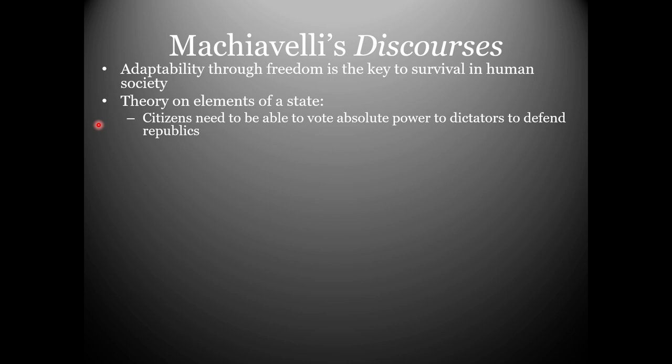What are the elements of a Machiavellian state in the Discourses? First, if you have any kind of representative government, for any government form to survive, it requires citizens to be able to vote absolute powers to dictators to defend republics. The word 'dictator' comes from Rome — in a time of war, you'd vote on a dictator for a year session and gave him absolute power to fight the war. Then you could vote them out. Why? Because the last thing you need in a war is deliberations of a representative government. Making quick, effective decisions is not something representative governments do right — they've never done it in all of history.